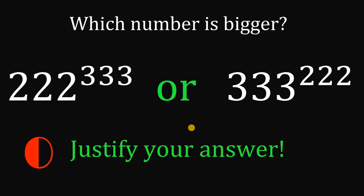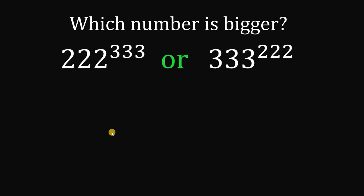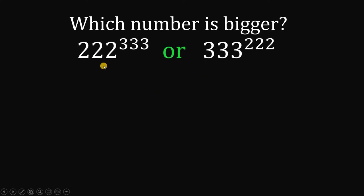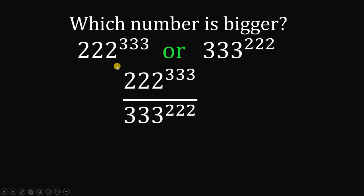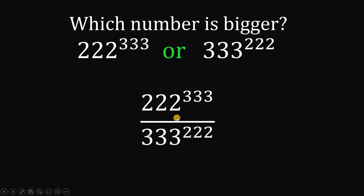And now, let's answer this question together. So which number is bigger — 222 raised to 333, or 333 raised to 222? To answer this question, let's consider this ratio: the first number over the second number — 222 raised to 333, all over 333 raised to 222.